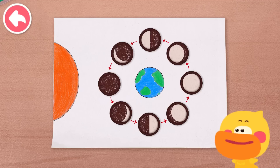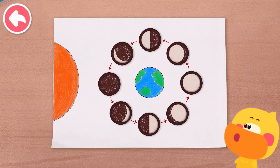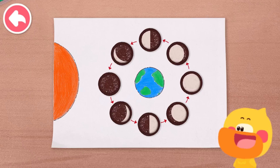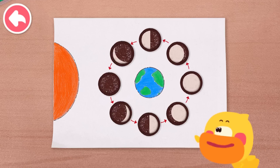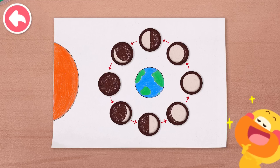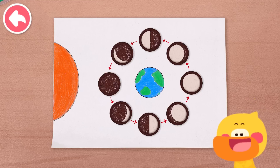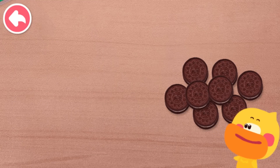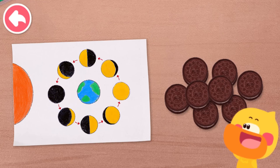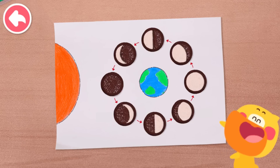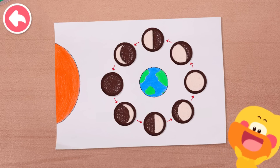Good job, kid! The moon always gets bigger from a new moon to a full moon, and becomes smaller from a full moon to a new moon. This is the law of the phases of the moon. Now do you understand? We only need eight sandwich cookies and a finished moon phases diagram to make a cookie moon phases diagram. Make it with your mom and dad.